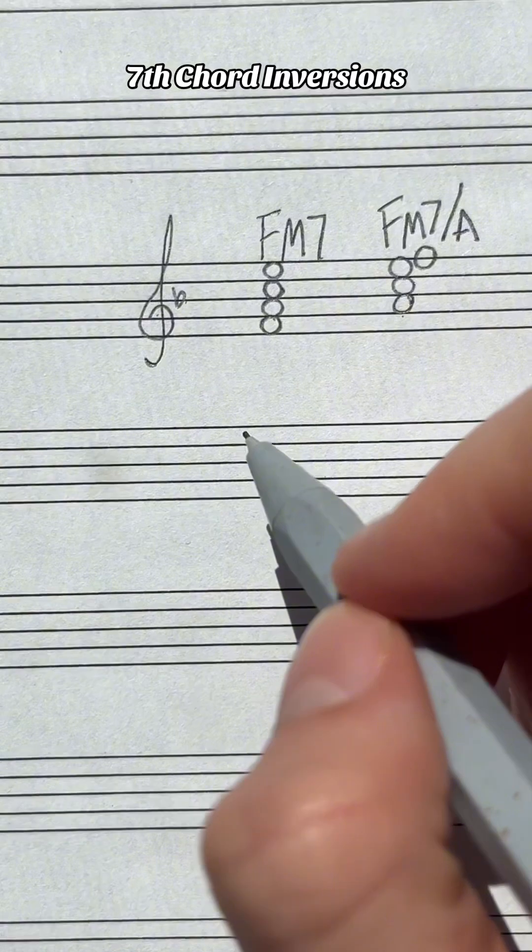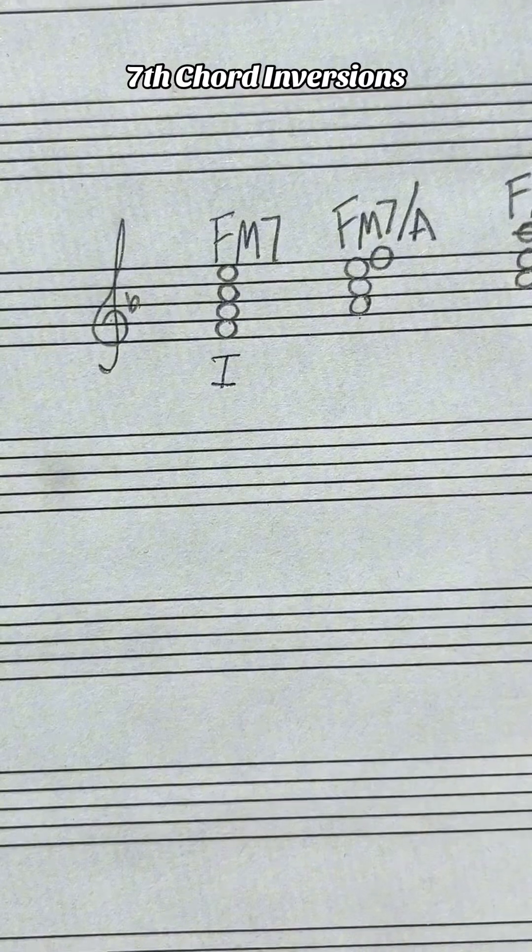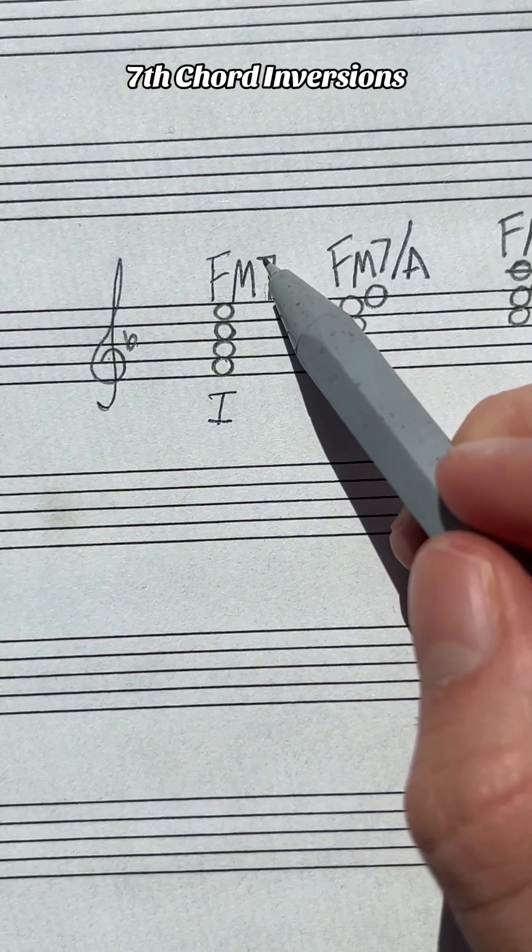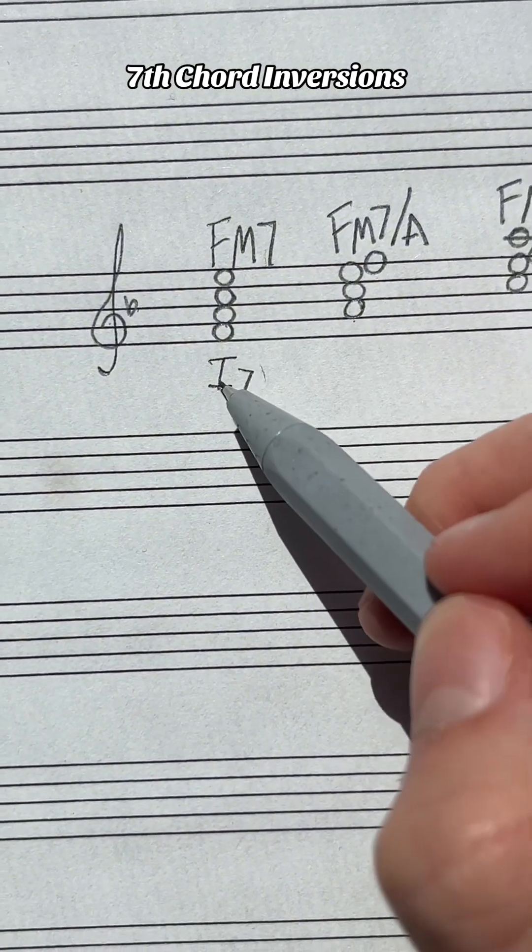It looks like we're in the key of F major, so we're going to write for the function that this is the one chord, and the seventh is present. If we didn't have the seven, it would just be a triad.